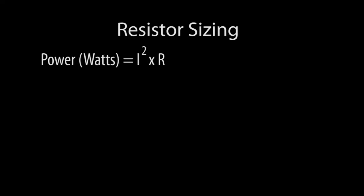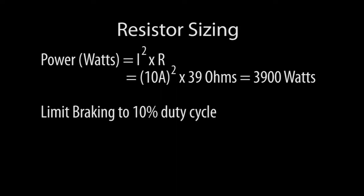If you do I-squared R, that tells us we need almost a 4000 watt resistor, right? Well, no, not really. Remember, you aren't braking 100% of the time. And you really want to limit braking to less than 10% of the time to give the resistor time to cool down. So what you care about is the average power. If we are braking 10% of the time then we could get away with something in the 400 watt range.